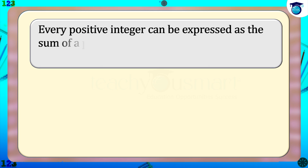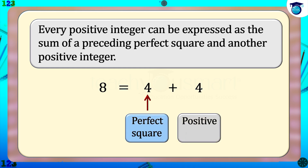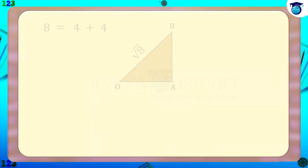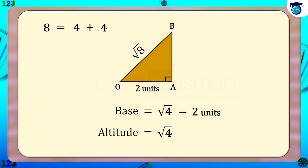We know that every positive integer can be expressed as the sum of a preceding perfect square and another positive integer. So 8 can be written as 8 = 4 + 4. For getting √8 as the hypotenuse of a right-angled triangle, take the square root of these numbers as base and altitude. That is, base = √4 = 2 units, and altitude = √4 = 2 units.